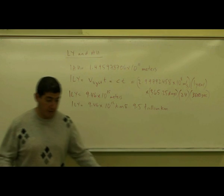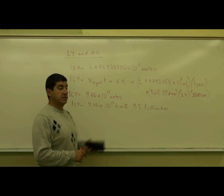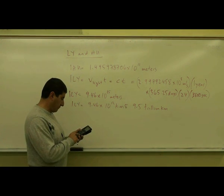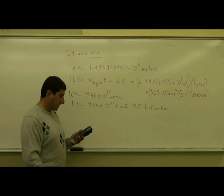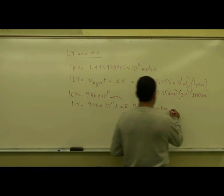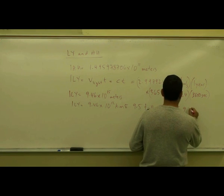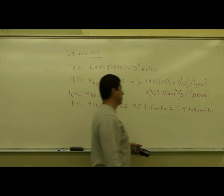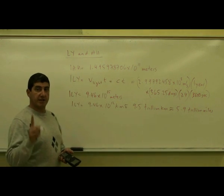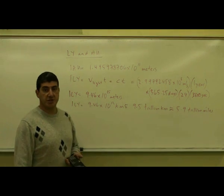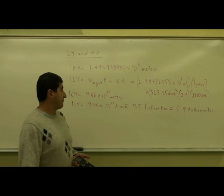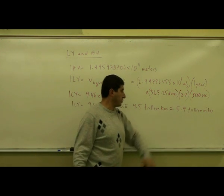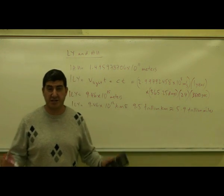And if you even want to remember it in terms of a mile, one mile is 1.6 kilometer. So divide 9.46 by 1.6, you get 5.9. So approximately 5.9 trillion miles. So imagine if you travel at the speed of light, you would go 9.5 trillion kilometers or 5.9 trillion miles. Imagine how far a distance that is.